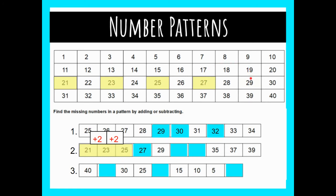Two more is 29 — which they already gave us — and then two more: I count one and go back to the next row, two — 31 is next in the pattern, and then two more is 33. The pattern below continues: 35, 37, 39. This is a plus-two pattern.